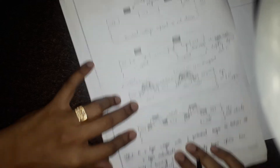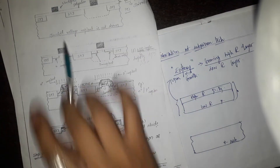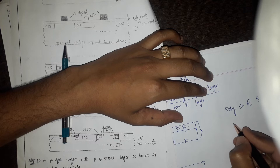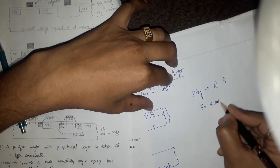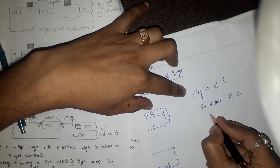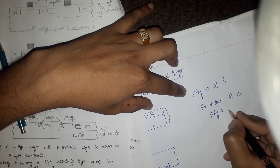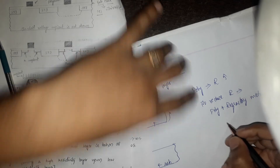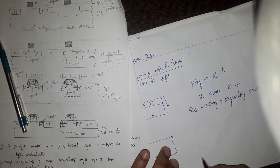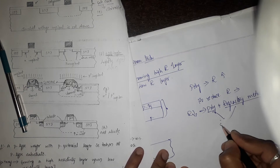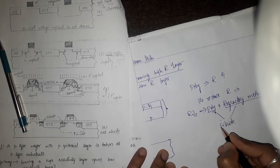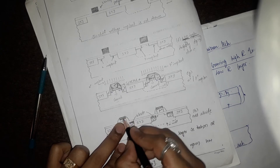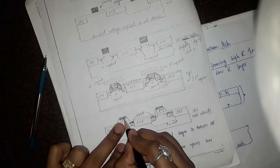The resistance of the polysilicon is high, so to reduce the resistance of the polysilicon, it can be combined with refractory metals like tungsten and molybdenum. This combination of silicon with refractory materials is referred to as a silicide layer. As shown in figure H, the silicide layer — silicon with refractory material — has been deposited on the N+ polysilicon, and similarly the silicide layer has been deposited on the P+ polysilicon.